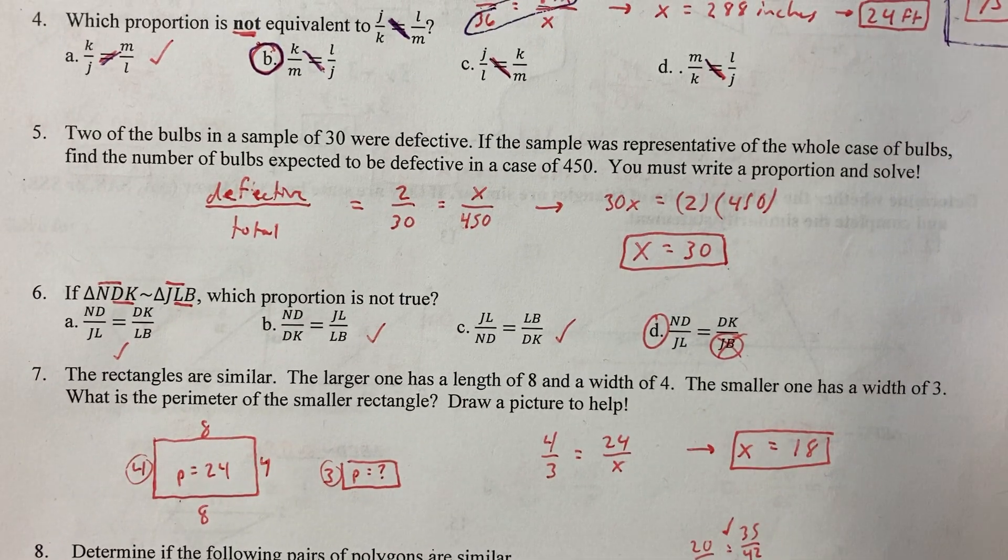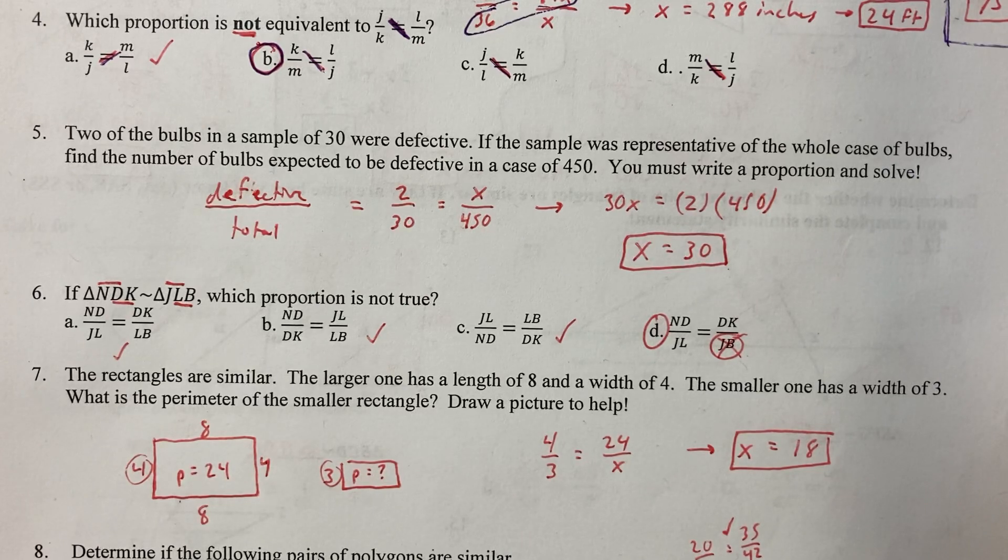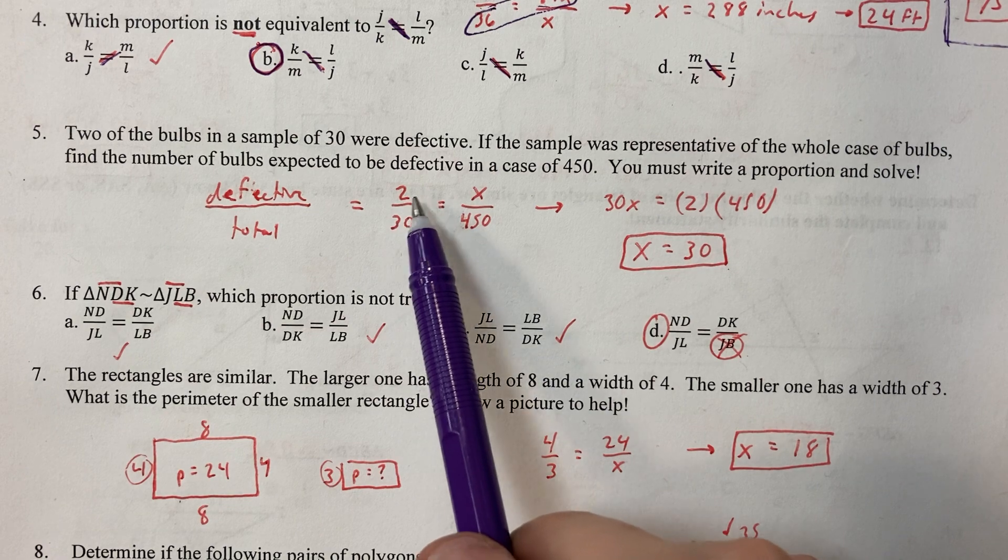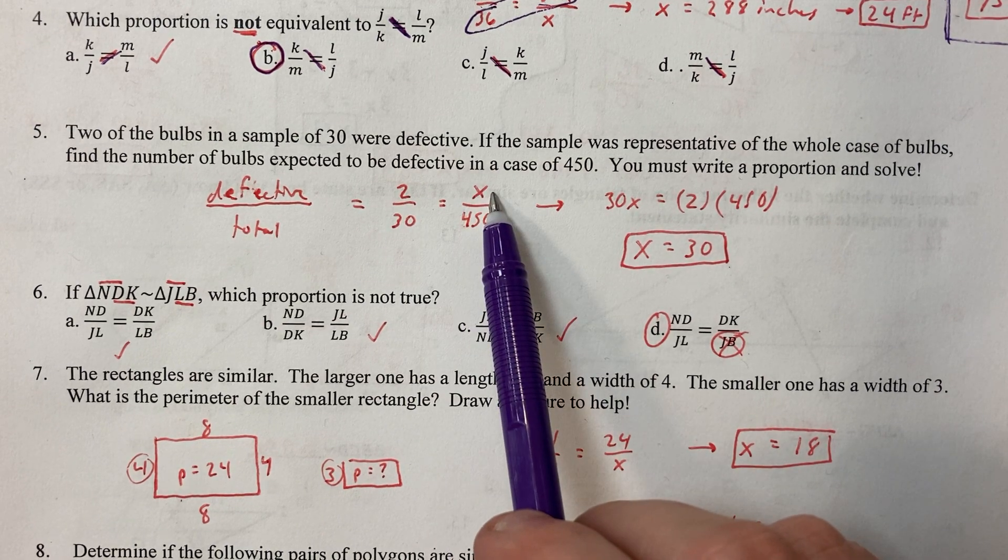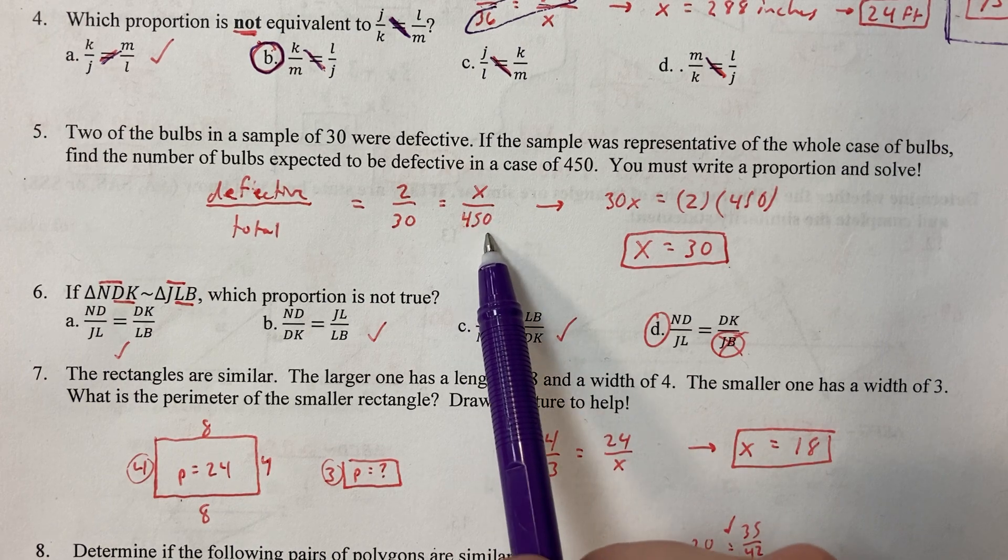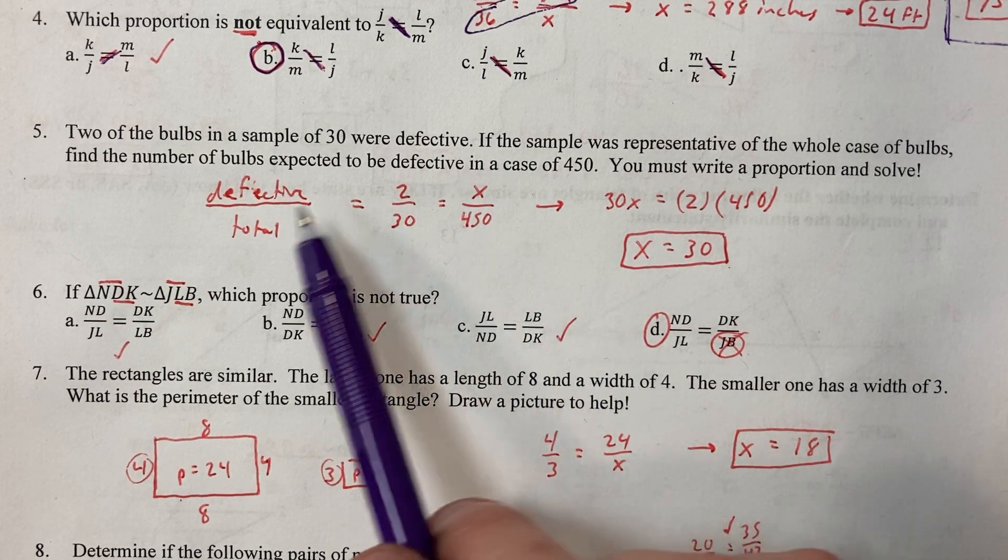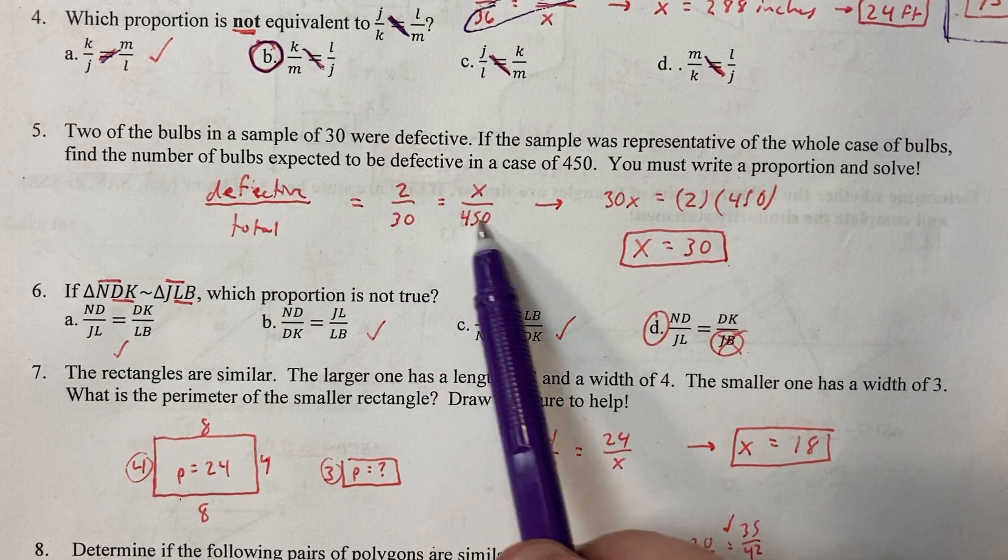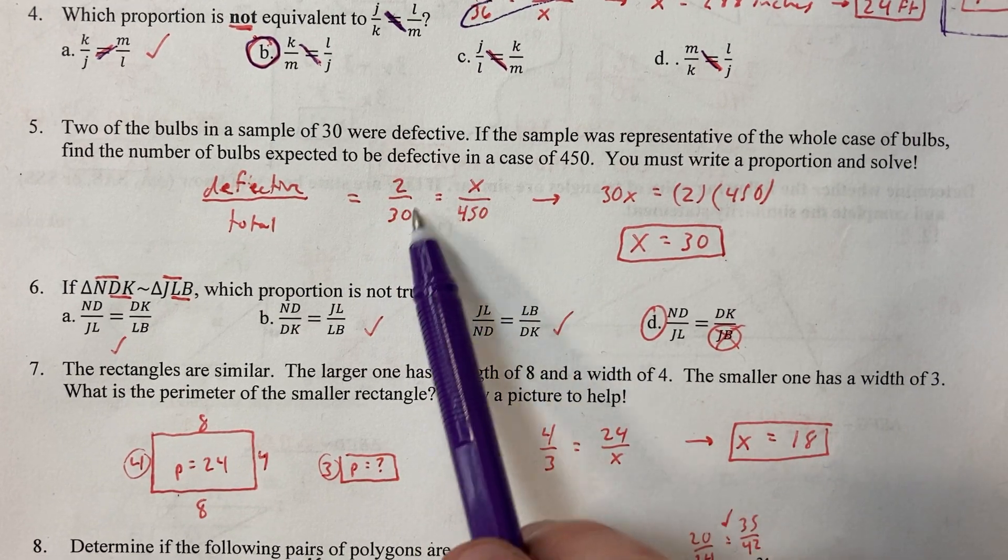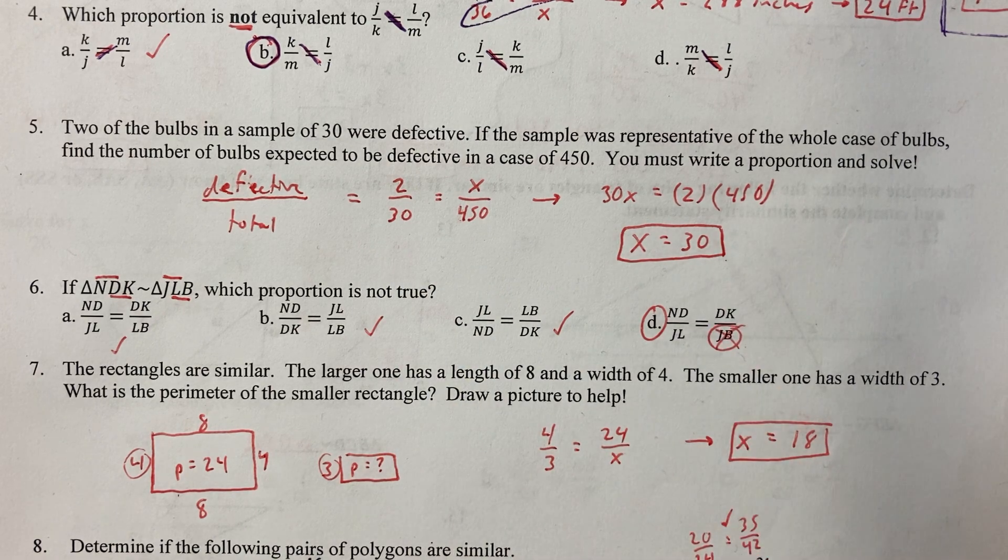Next we're looking at defective bulbs. The ratio of defective to total. They tell us that 2 were defective in a sample of 30. How many defective in a sample of 450? Set up my proportion. I did defective over total. Cross multiply and divide by 30. Get your answer.